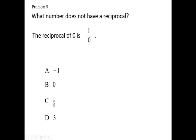Let's see what's wrong with answer C. The reciprocal of 1 fifth is 5 over 1. Okay, you're turning the number upside down. So we have a reciprocal of 1 fifth, and the reciprocal of 3 is 1 over 3, or 1 third.